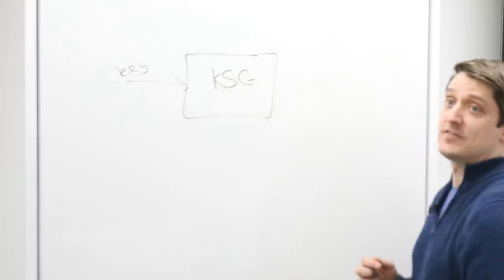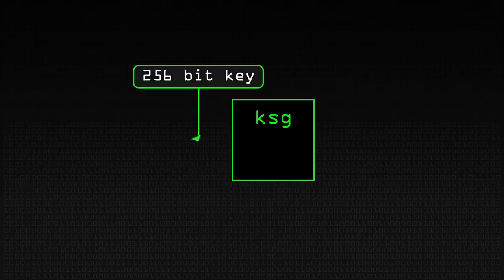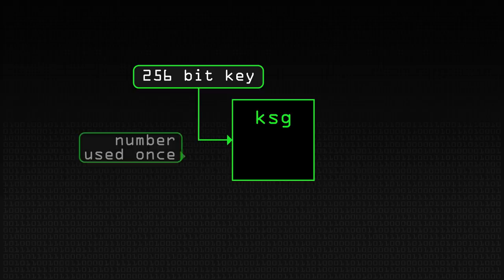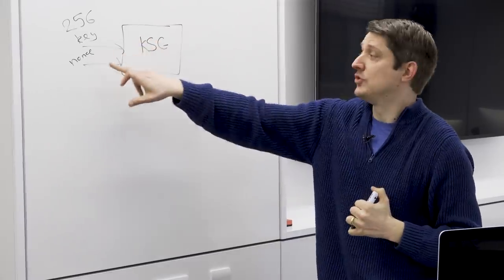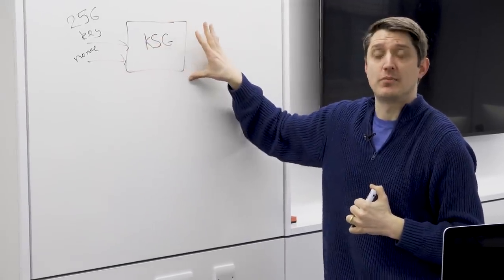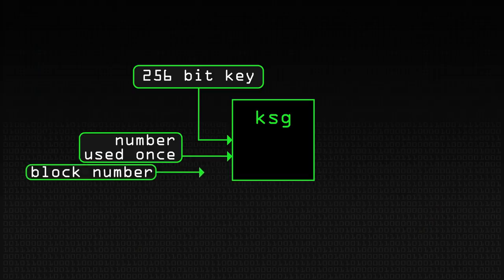You have a key that comes in here. So this is your secret key, which in the case of ChaCha is 256 bits. We also put in a nonce, which is a number used once. And that's used to make sure that if you don't change this key, you can generate different key streams. And we also put in our block number, or our counter.